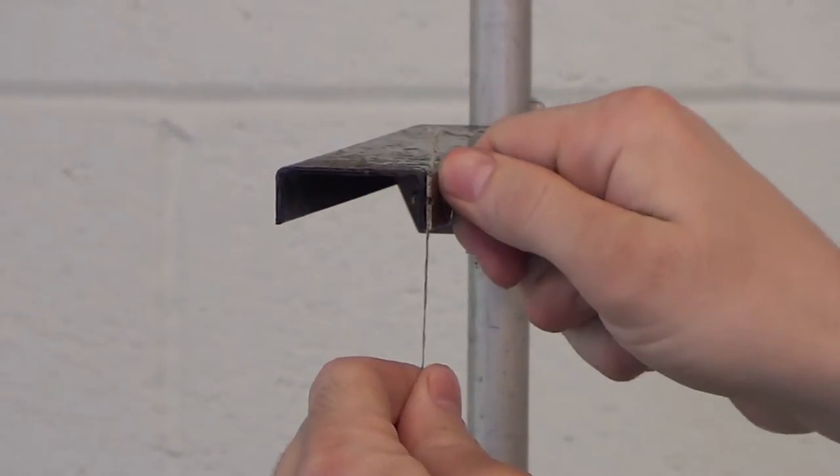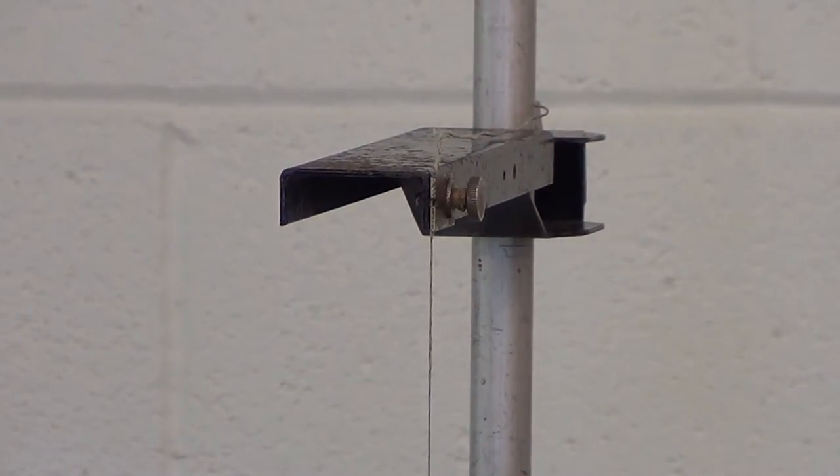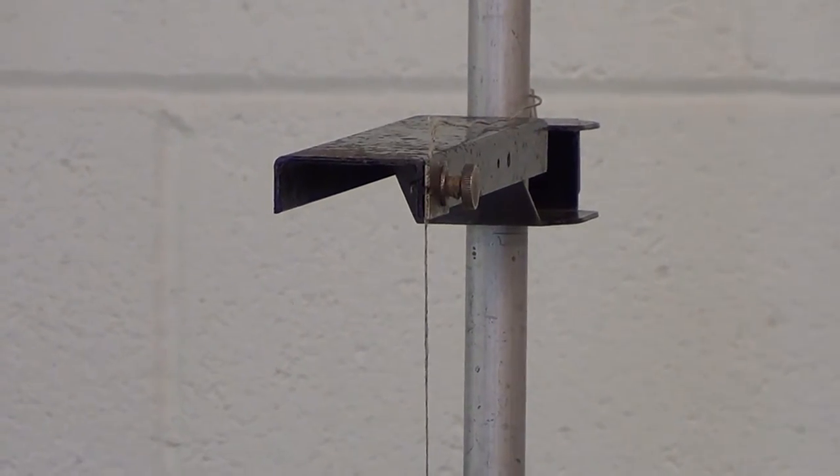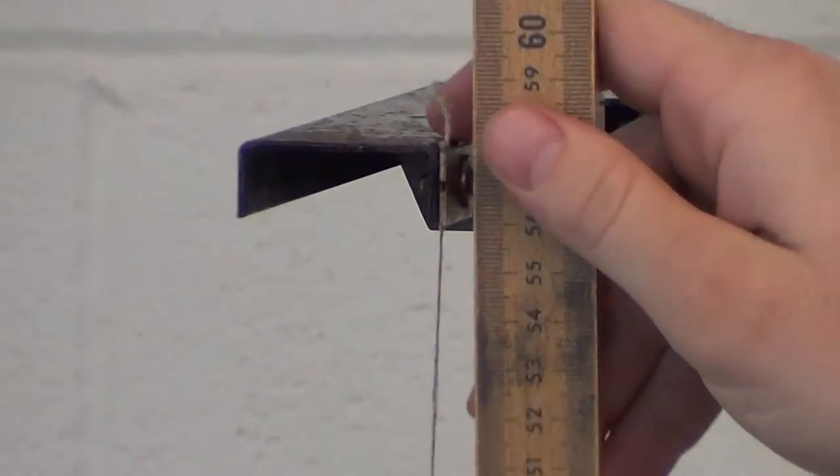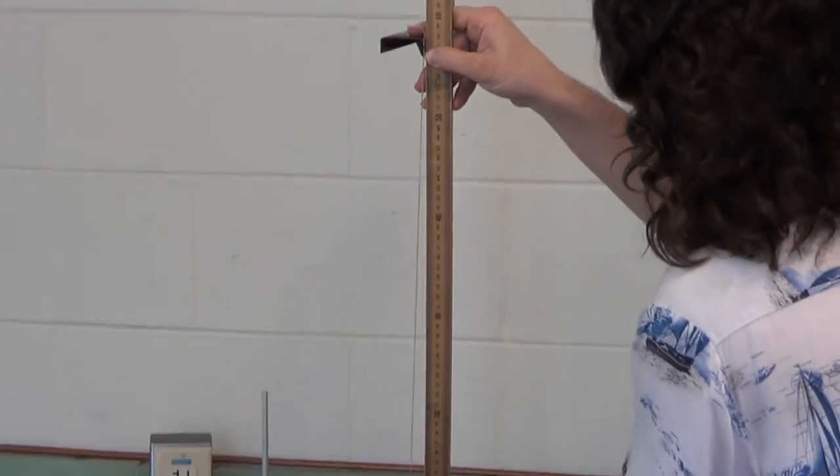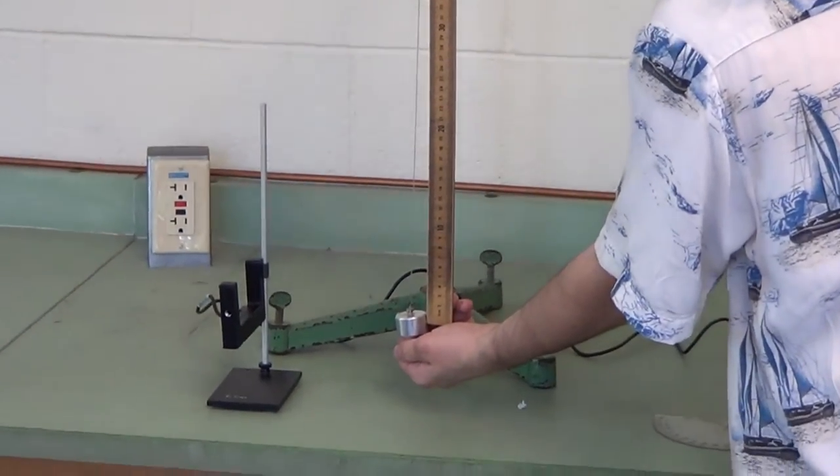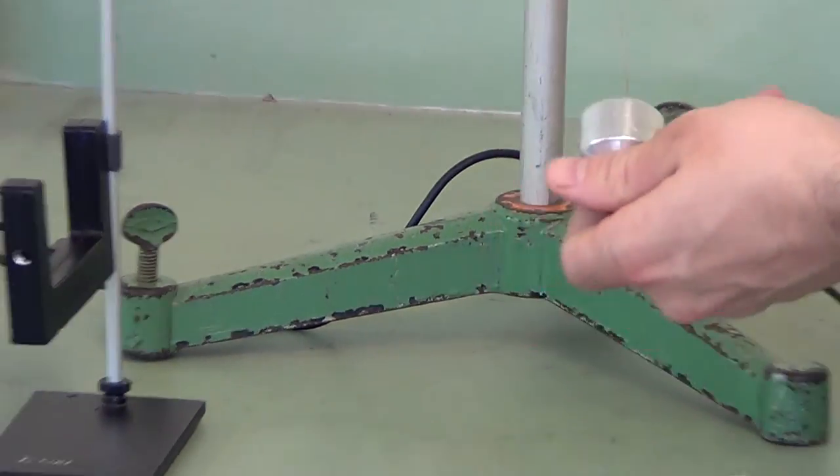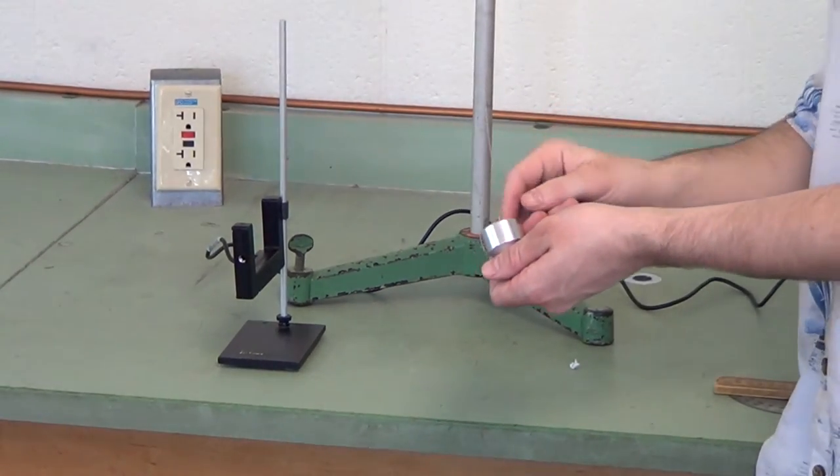Then we measure it from the very bottom here where the string comes off the boom to the center of the mass, roughly. The proper center of mass is about here, not the top of the bob.